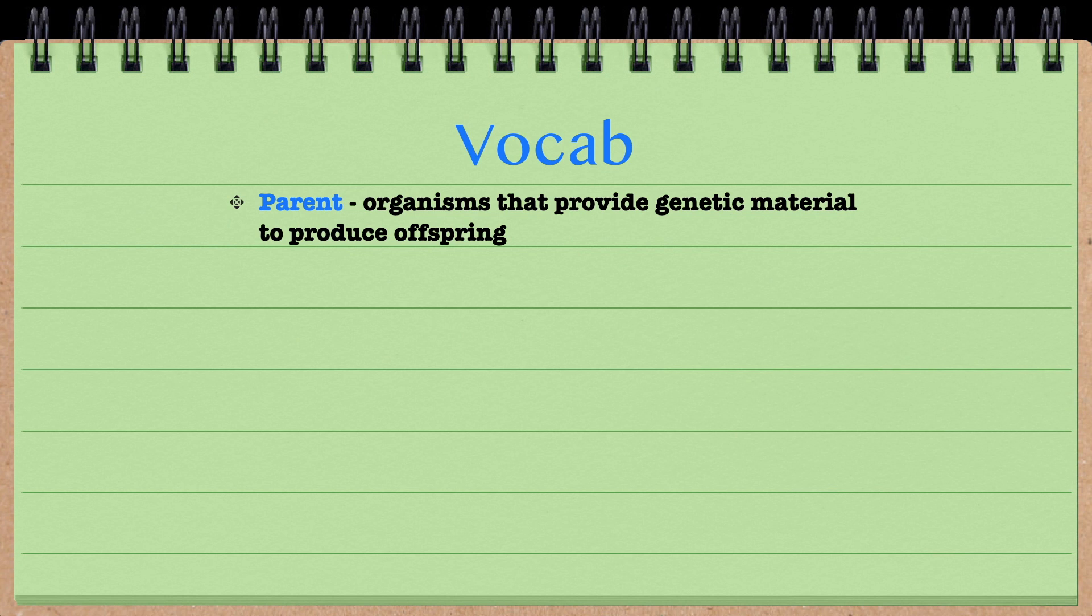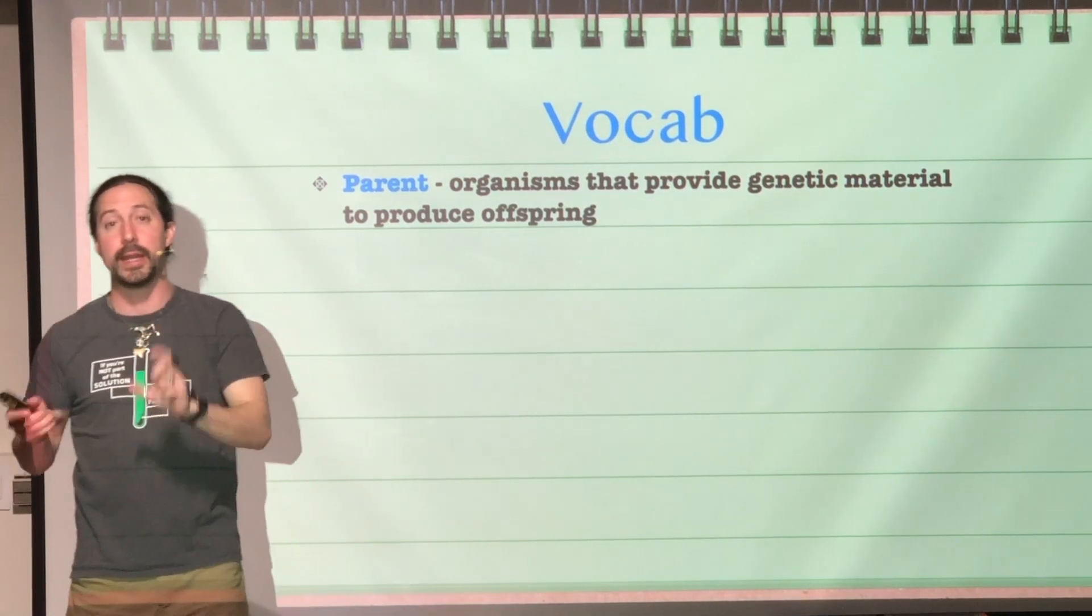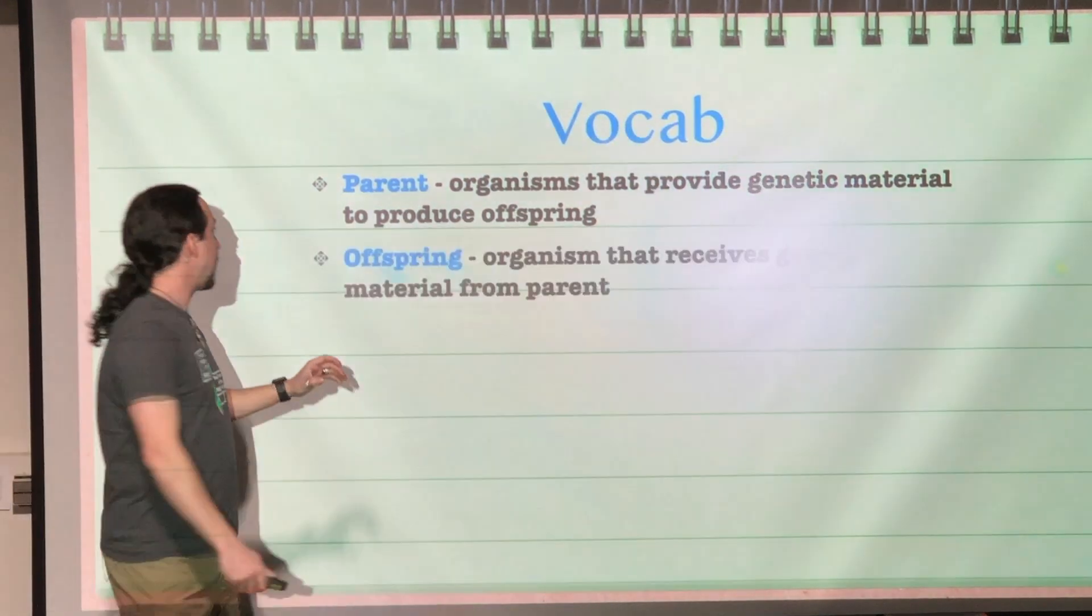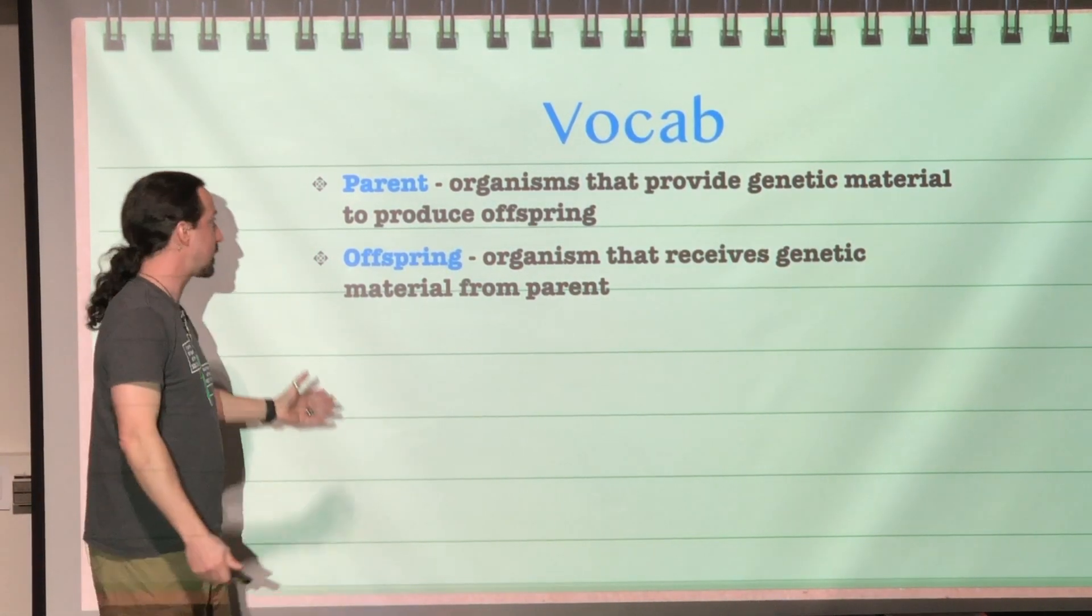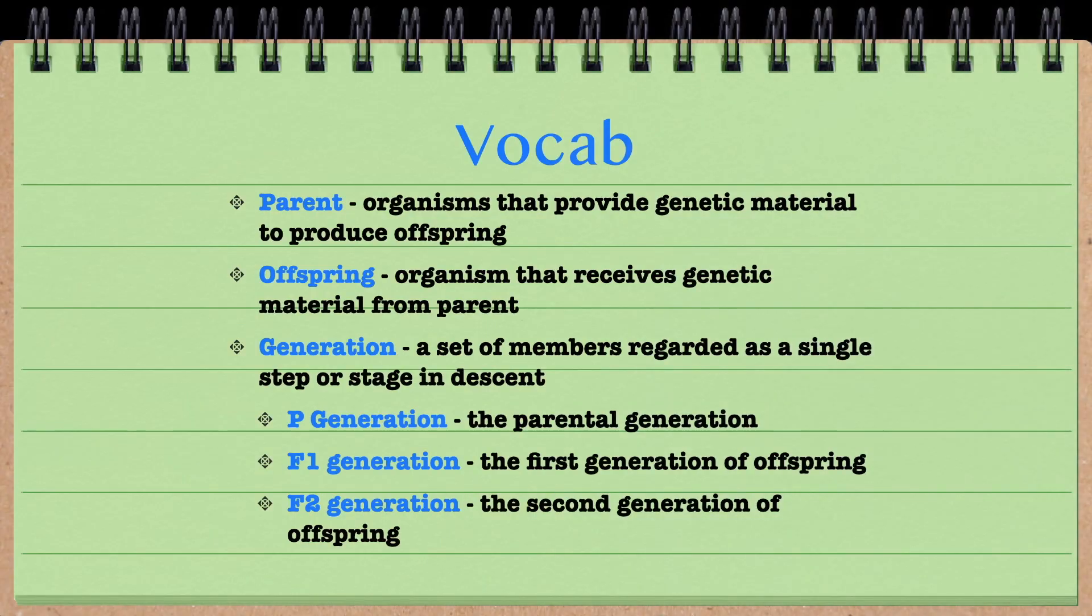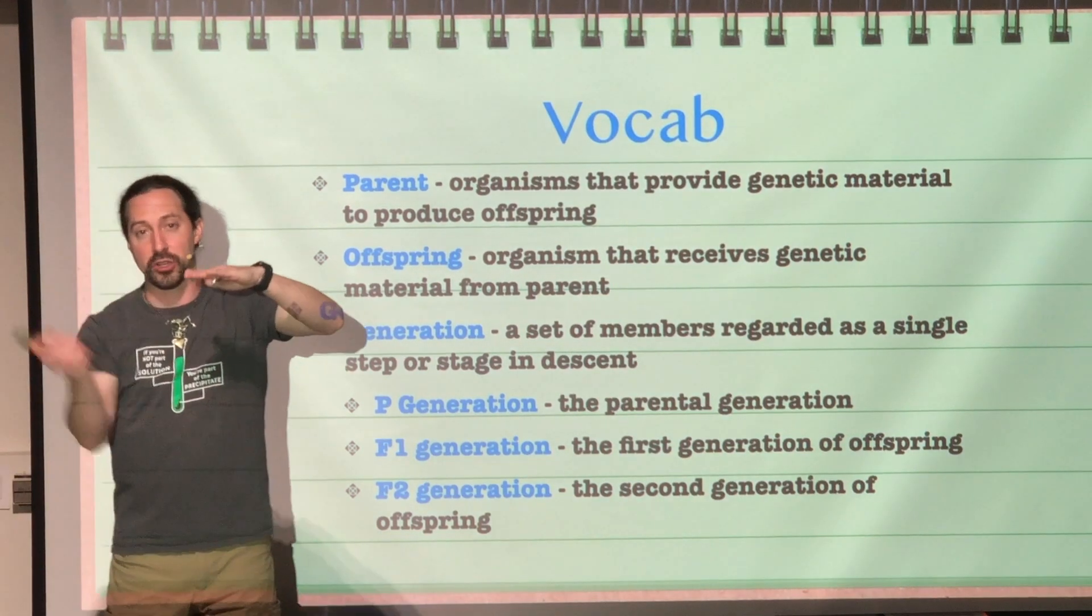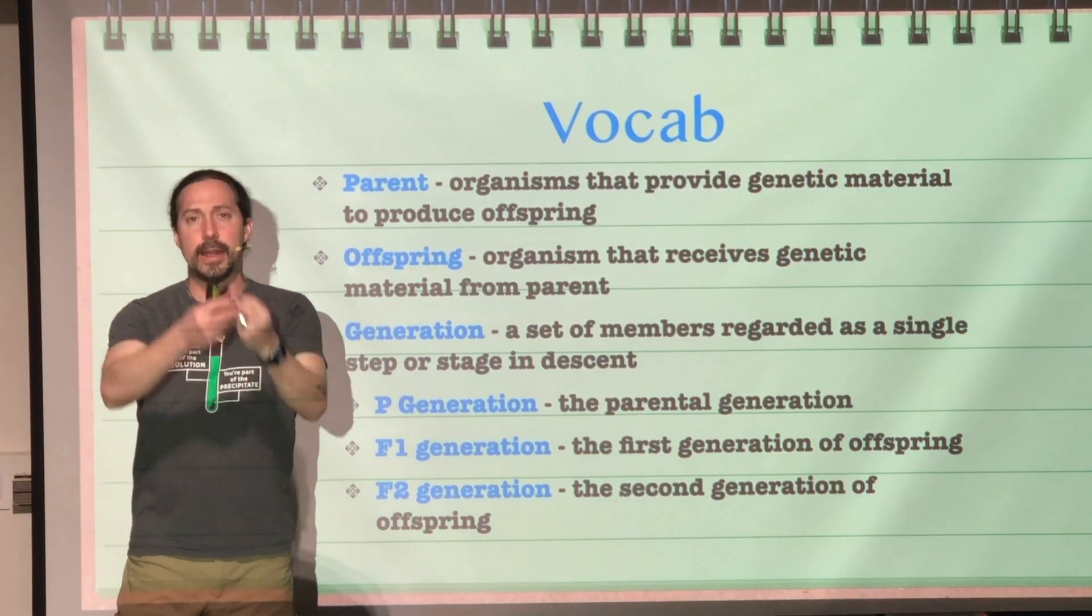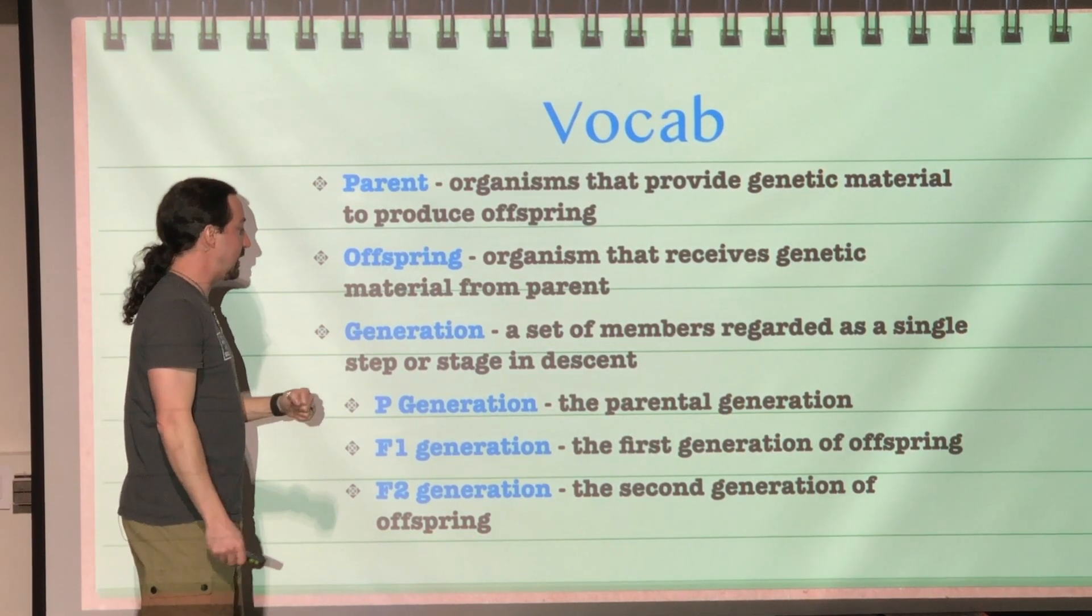First, a little bit of vocab. A parent is the organism that provides the genetic information or genetic material that will be in the offspring. The offspring is the organism that received the genetic material from the parent—it inherited that genetic material. Each transfer of genetic material is a generation: going from the parents to the offspring, then the offspring's offspring, and so on. Each level is a generation, a step in descent.